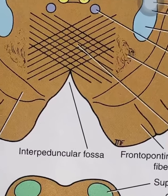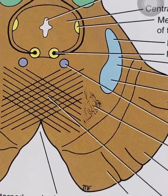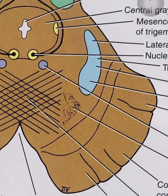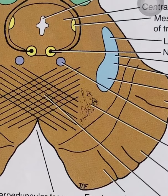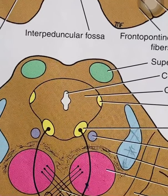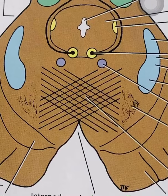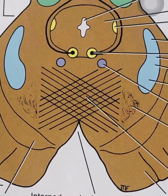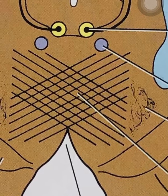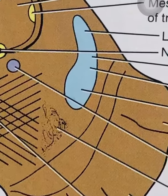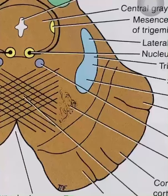Now moving to the inferior colliculus level — the fourth nerve corresponds to the inferior colliculus. Here you will find the trochlear nerve. Note the difference: the oculomotor nerve exits anteriorly, but the trochlear nerve exits posteriorly — it is the only cranial nerve to exit from the dorsal side. It also decussates before coming out of the midbrain. Also present here is the decussation of the superior cerebellar peduncle, and the four lemnisci: medial, spinal, and lateral.